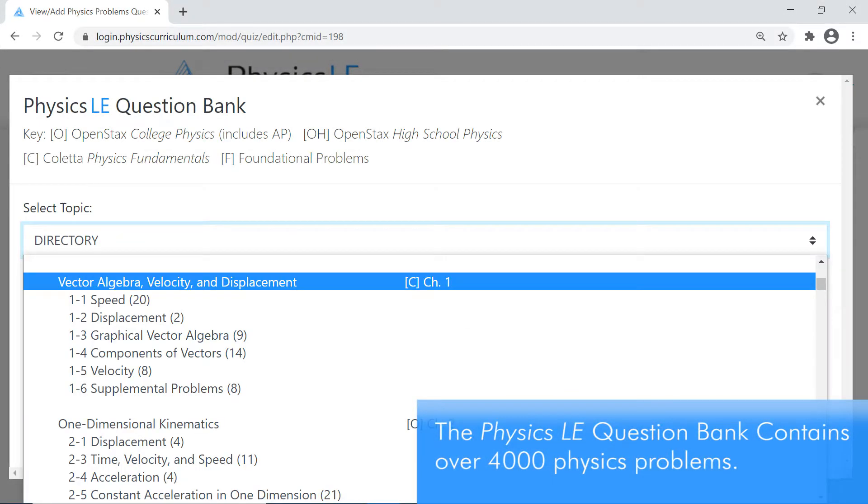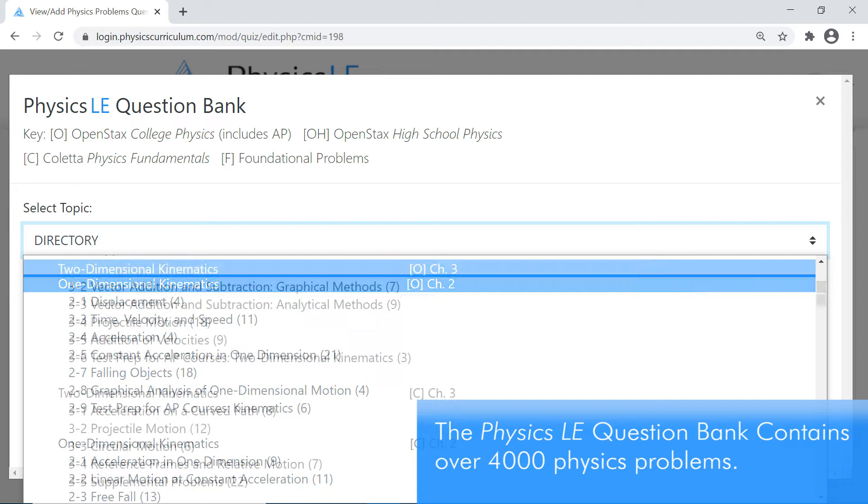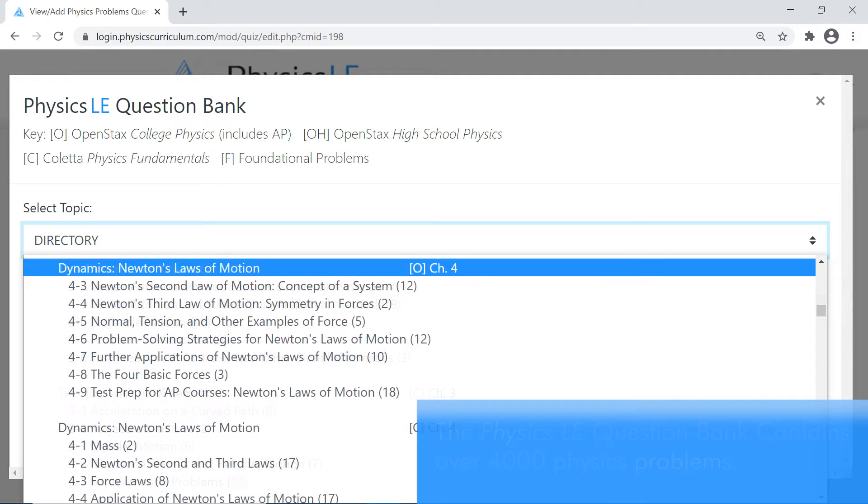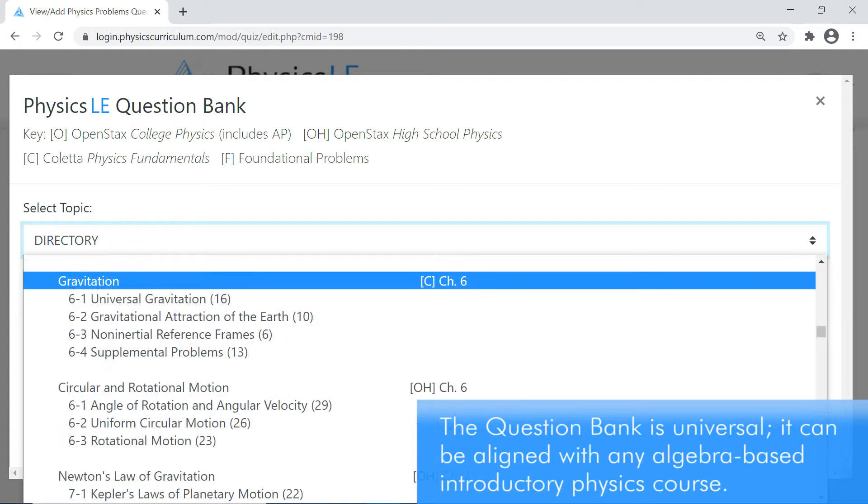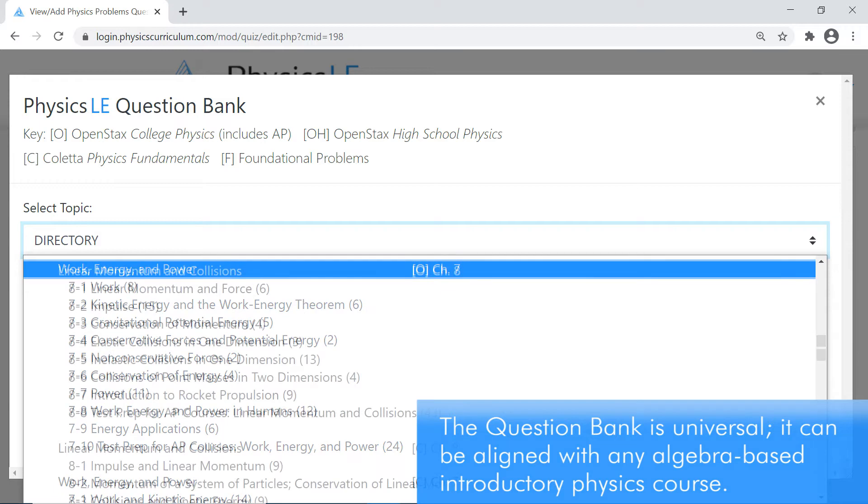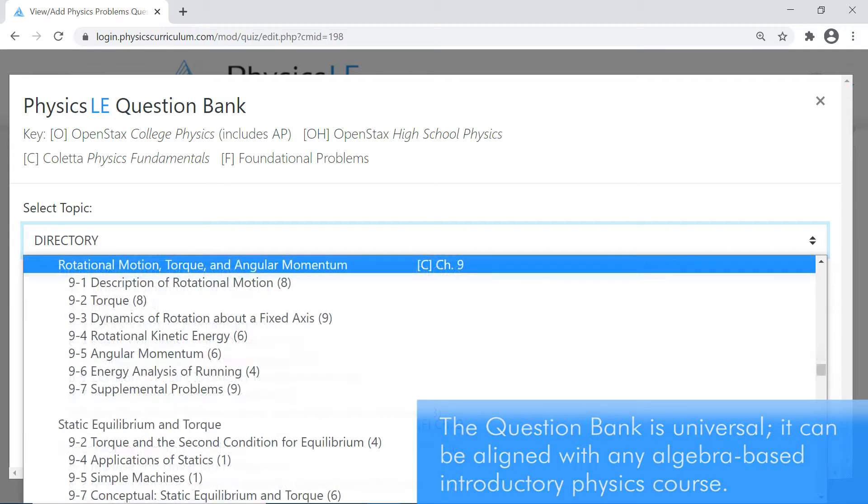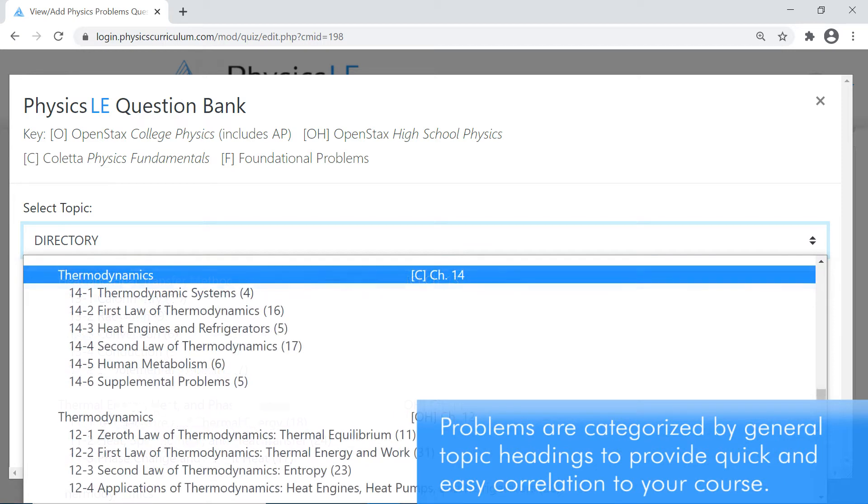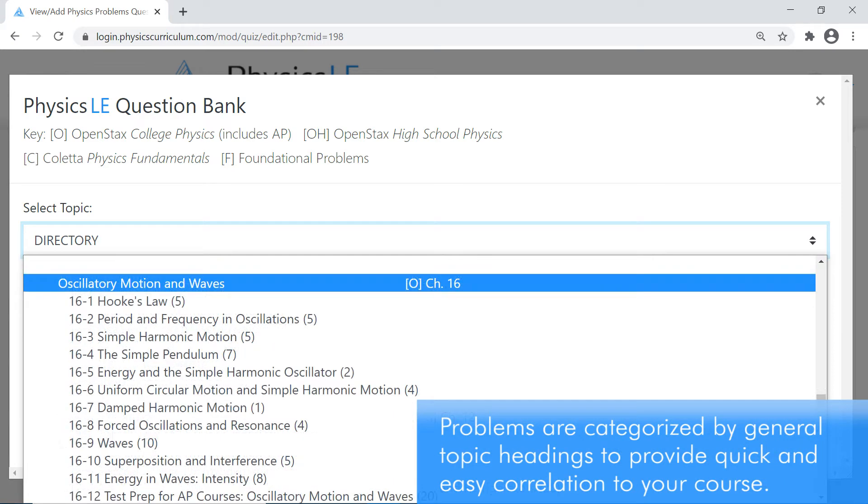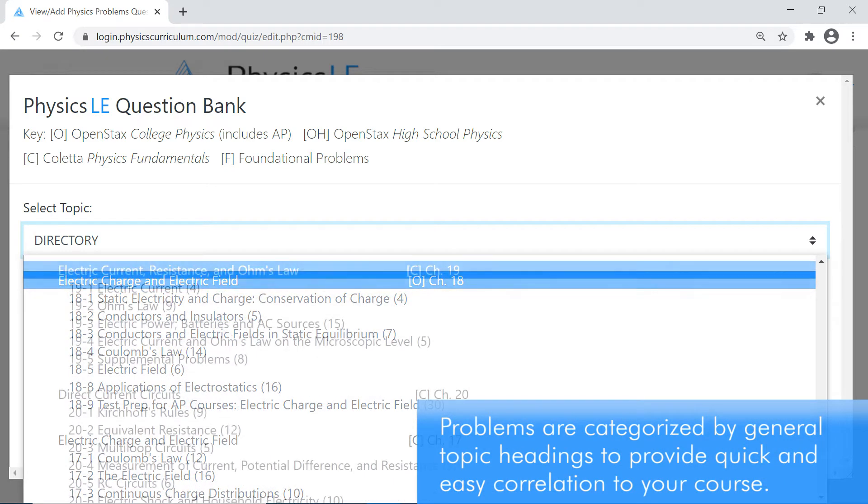The Physics LE Question Bank contains over 4,000 physics problems. The Question Bank is universal and can be aligned with any algebra-based introductory physics course. Problems are categorized by general topic headings to provide quick and easy correlation to your course.